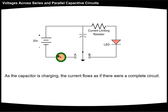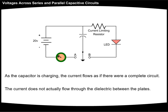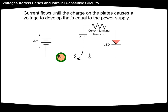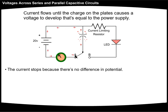As the capacitor is charging, the current flows as if there were a complete circuit. The current does not actually flow through the dielectric between the plates. Current flows until the charge on the plates causes a voltage to develop that's equal to the power supply. The current stops because there's no difference in potential.